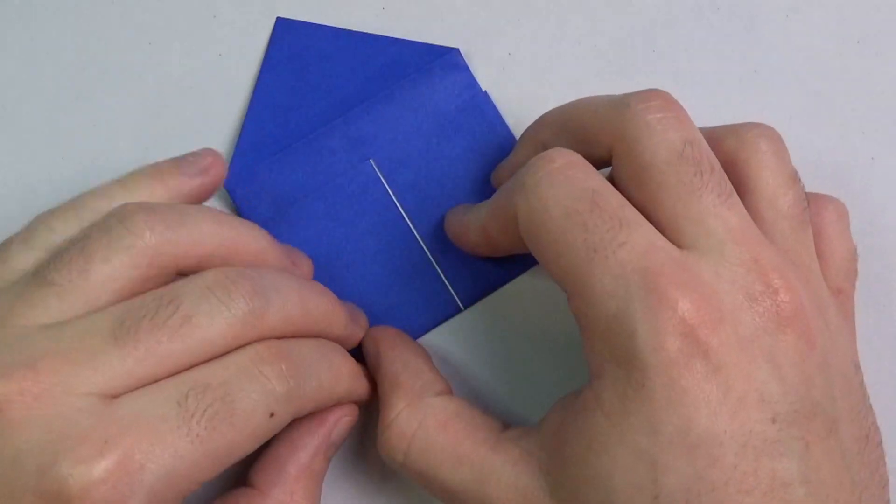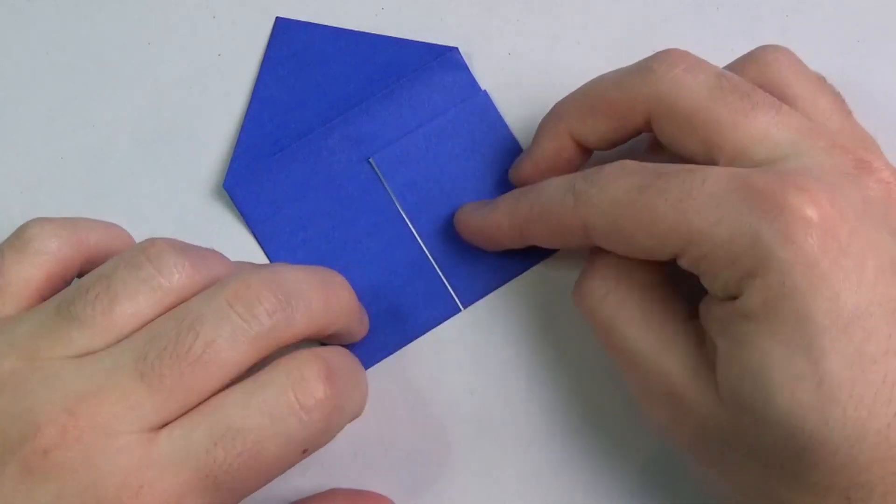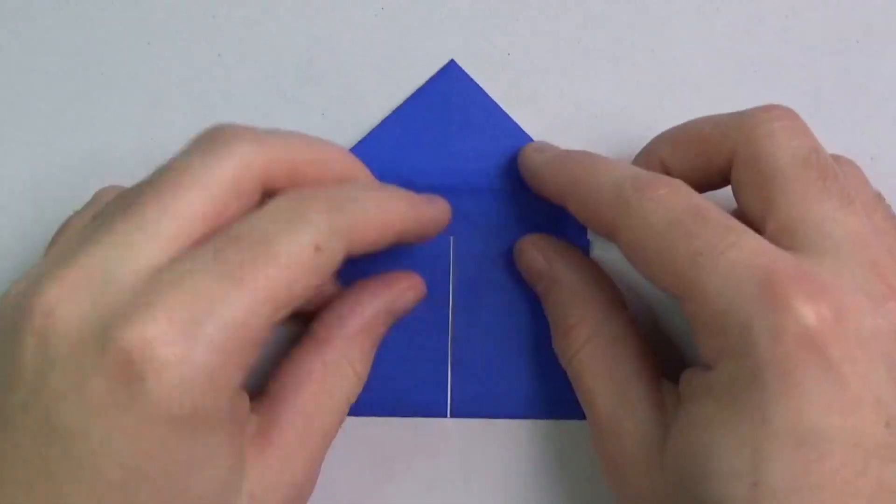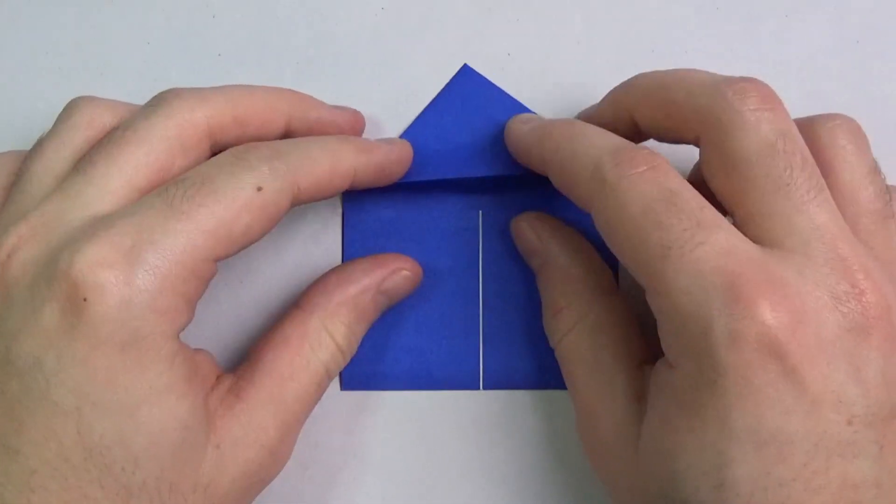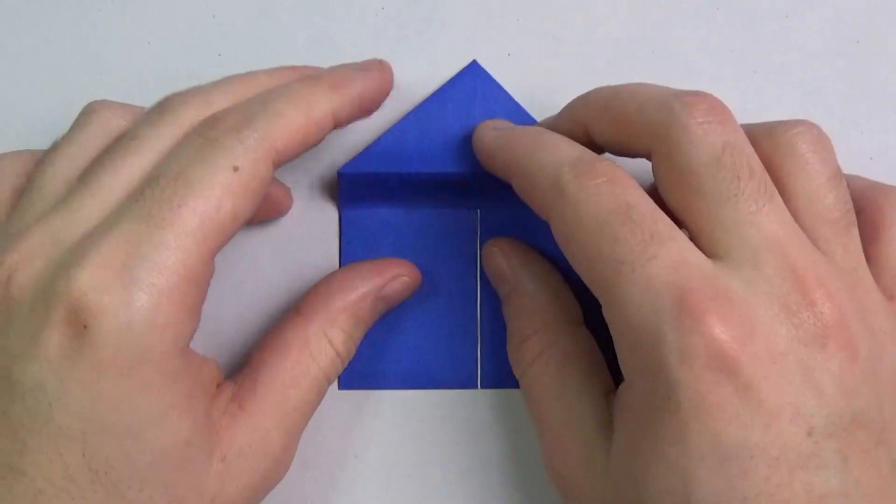But yeah, it doesn't need to be perfect. Just eyeball it. Okay, and now take this crease, make it, and fold it down right over that edge.